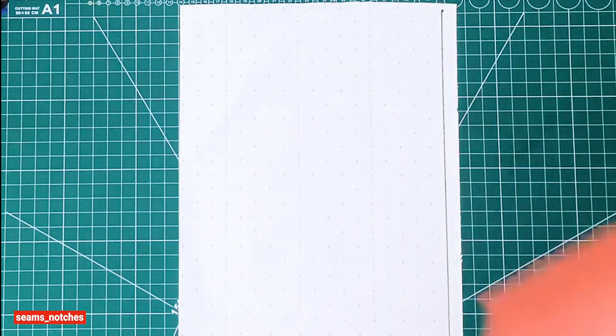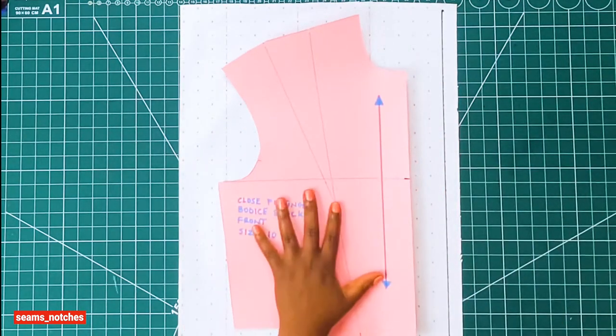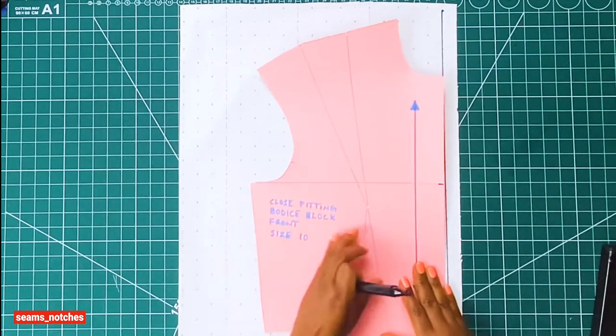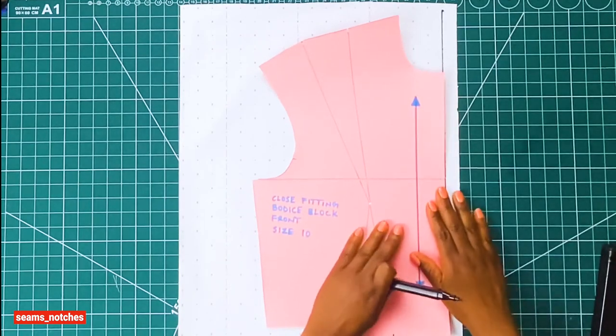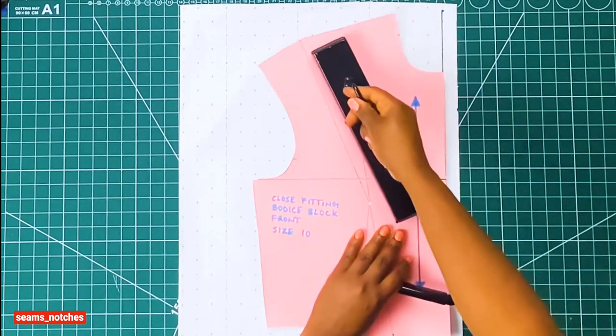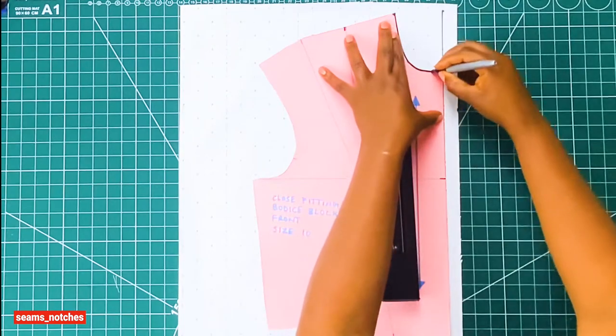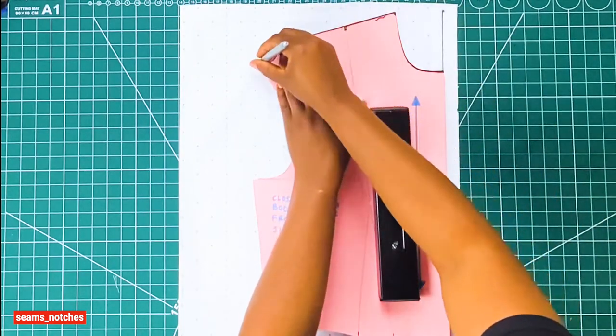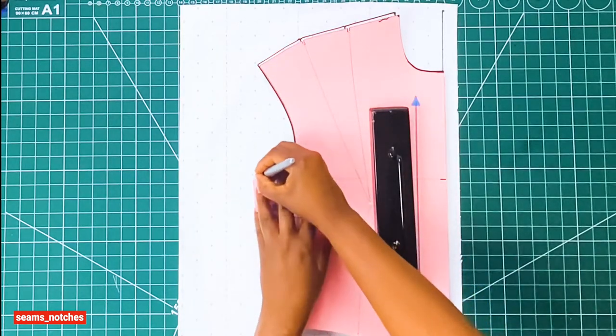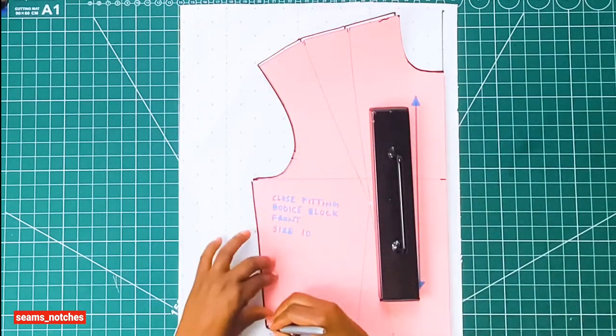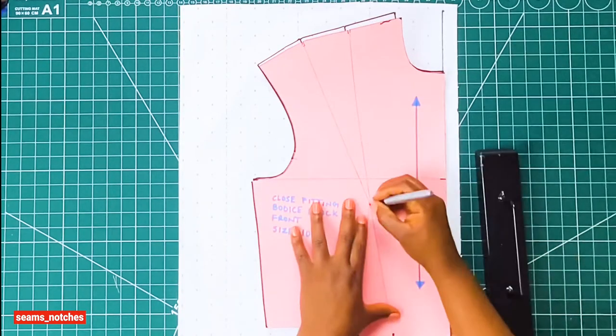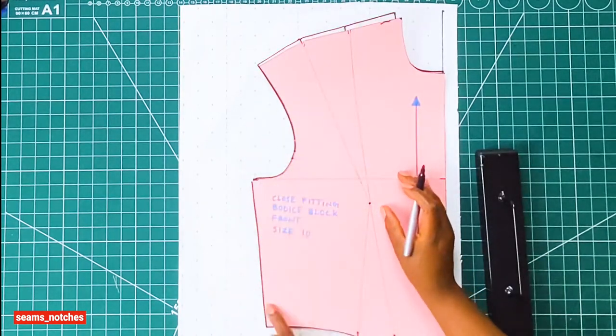Once that is drawn in, we need to get our front bodice—this is the shoulder dart bodice. If you've not seen our previous video where we drafted this bodice, I'm going to leave a link on the screen. If you have yours ready, you can go ahead to trace off this block. Always remember while tracing, make sure you don't leave out the notches and dot lines. Make sure all the information is well traced out.